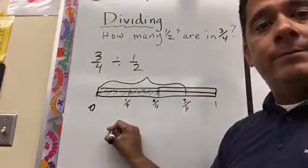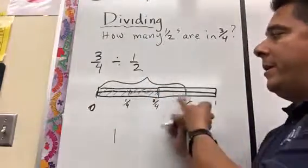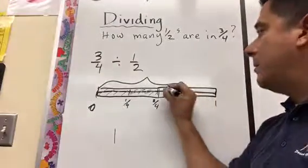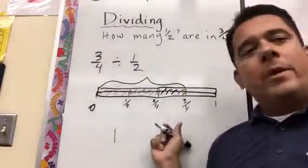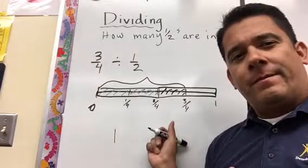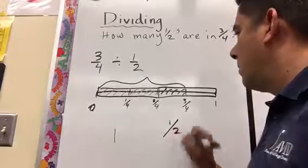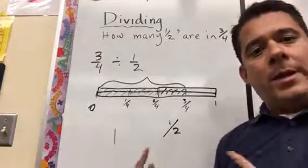This is a whole half, right? Now this is another half. But we only have half of that half in 3 fourths. So this would be indicated by a half.